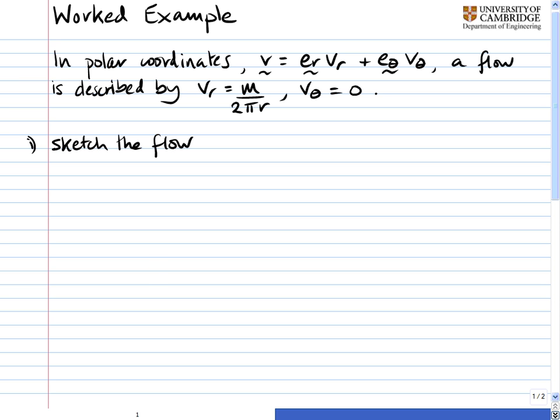So let's start by defining an origin, that point there, and we can see from the flow v_r is equal to something, v_theta is 0. That means that everything is moving in a radial direction away from that point. So there's no motion in the theta direction, everything is moving away.